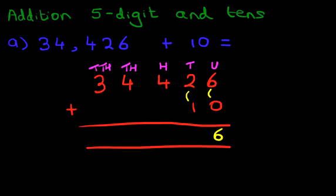2 plus 1 is 3. And as for the hundreds, thousands, and the ten thousands, we're not adding anything to the numbers so they remain the same. So this one remains a 4. The thousands also remain a 4. And the ten thousands remain a 3. And we have our answer.